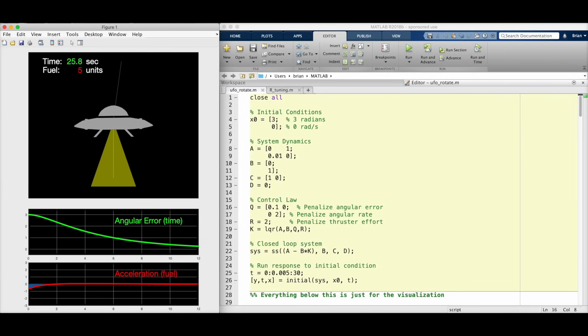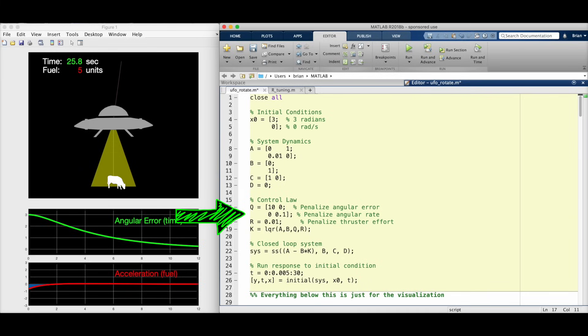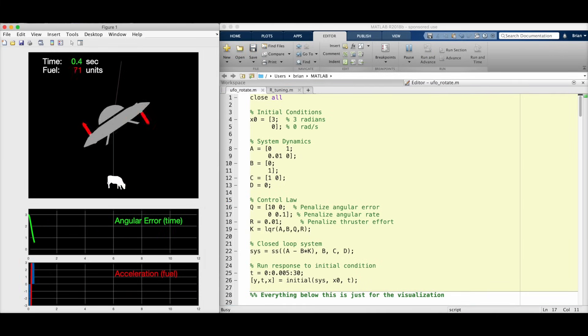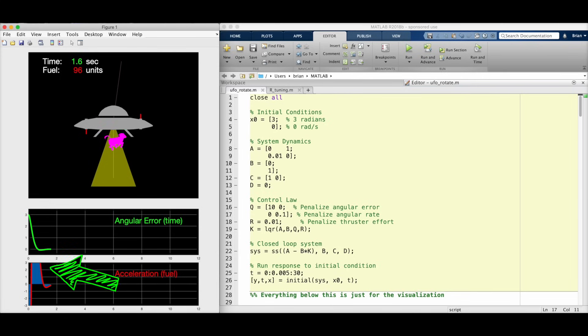And we can go the other way as well and tune a really aggressive controller. Okay, yeah, that's much faster. Less than 2 seconds and our acceleration is off the charts. That's how you rotate to pick up a cow. Unfortunately, it's at the expense of almost 100 units of fuel, so there's downsides to everything.